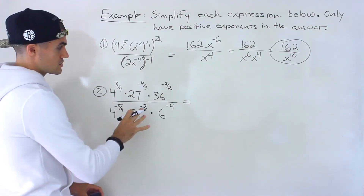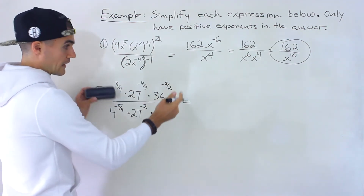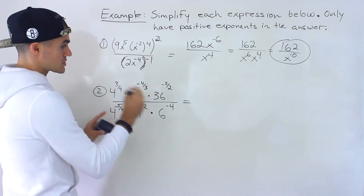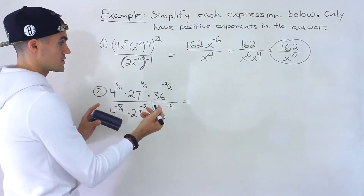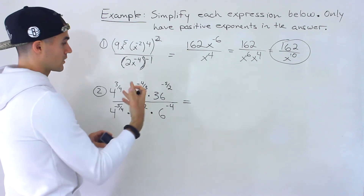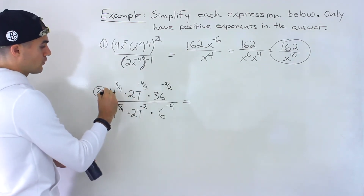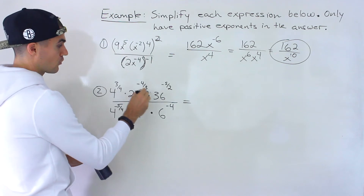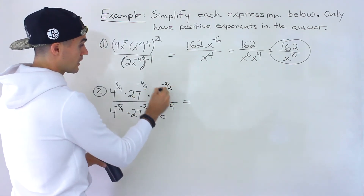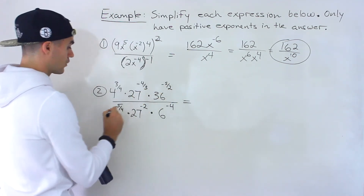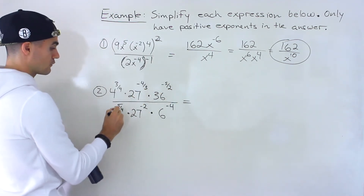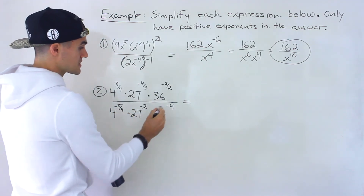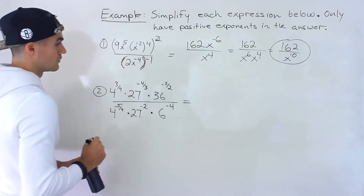Moving on to number 2. There are no variables here, so our final answer is actually going to be all in numbers, but there may be rational exponents left — we'll see. We just have to make sure they're going to be positive. So we've got 4 to the power of 3/4 times 27 to the power of negative 4/3 times 36 to the power of negative 5/2, all over 4 to the negative 5/4 times 27 to the negative 2 times 6 to the negative 4.